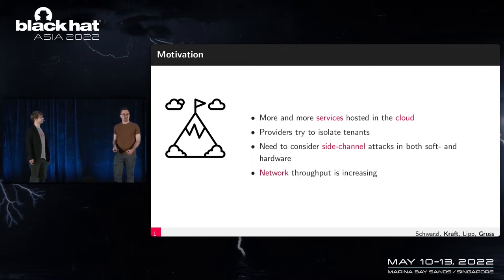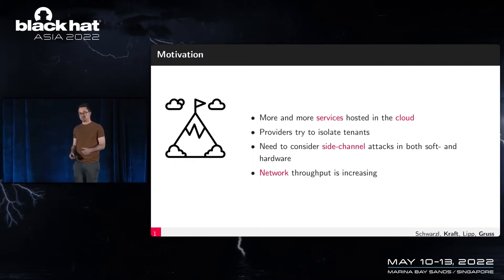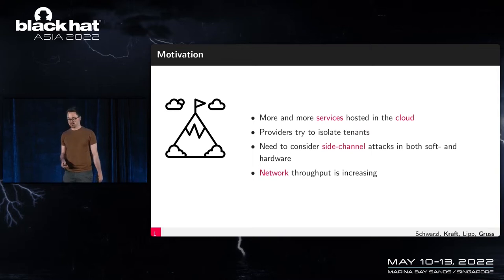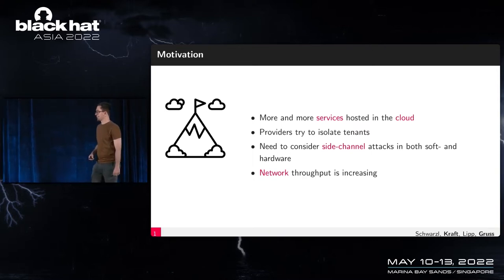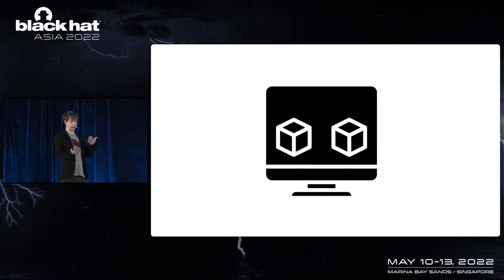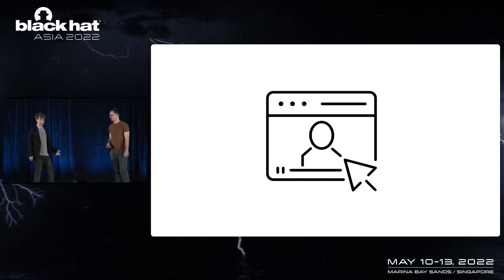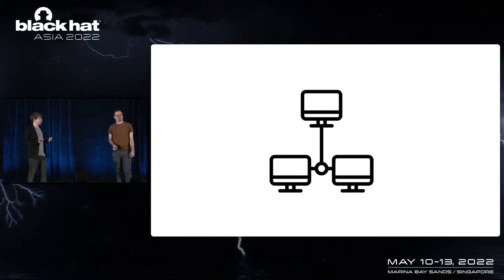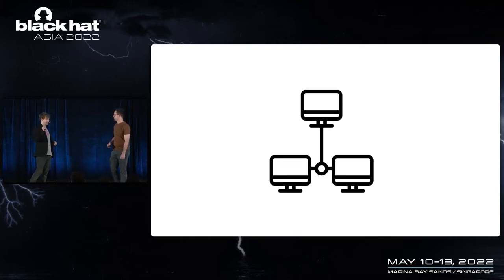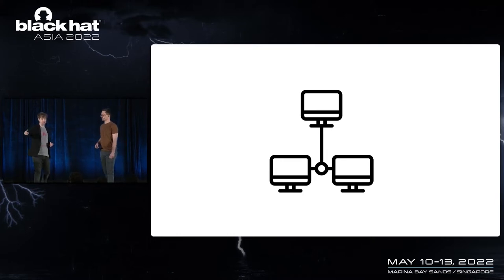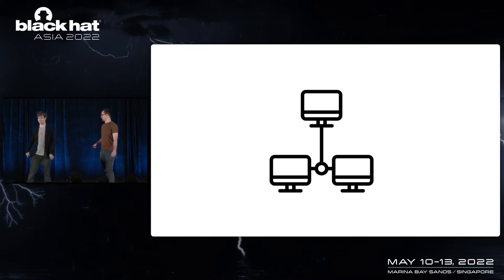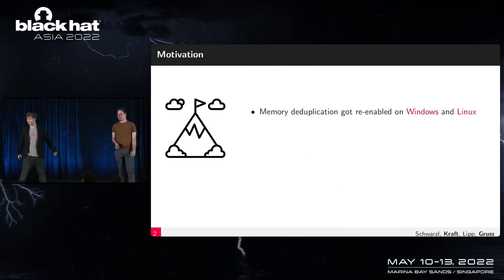Network throughput is increasing and latencies are becoming more stable, which makes remote attacks easier to achieve. Previously, these attacks ran on the same machine with the attacker and victim in different containers or virtual machines, or even in a browser via JavaScript. What we look at now is a network-based scenario: we want to attack a system where we don't run a single line of code, the system is not under our control, we just send network requests — and we still want to leak all the secrets. We got a CVE, so let's continue.